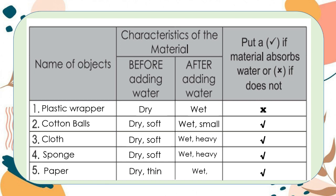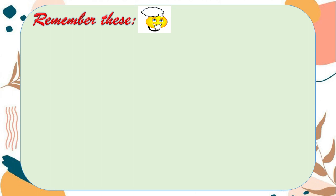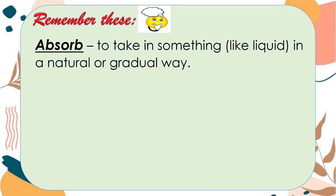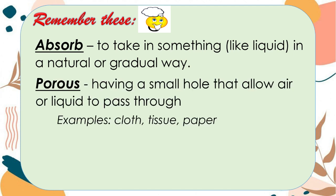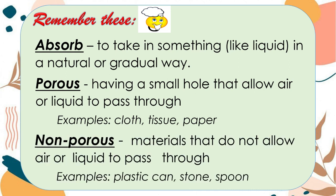I hope you got it right, kids. Here are the things you should remember. First is absorb — it means to take in something such as liquid in a natural or gradual way. Some materials can absorb water more than others. Next is porous — having small holes that allow air or liquid to pass through. Examples are cloth, tissue, and paper. Lastly is non-porous — materials that do not allow air or liquid to pass through. Examples are plastic can, stone, and spoon.